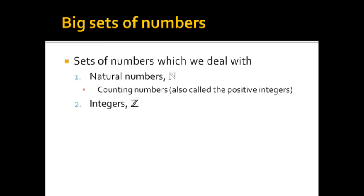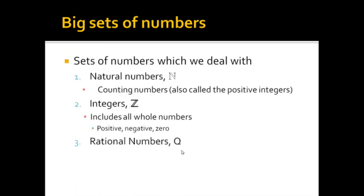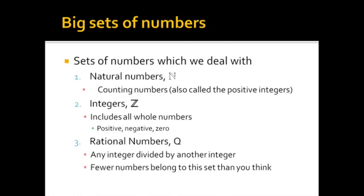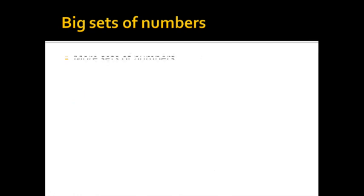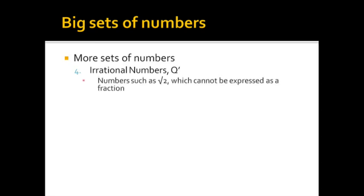The set of integers is basically all whole numbers, meaning the positive, negative, and zero numbers. Rational numbers, I'm just using the letter Q for this, and a rational number consists of any integer divided by another integer. Fewer numbers belong to this set than you think, actually. The rest are actually called irrational numbers, and I'm giving that the symbol Q' or Q with a tick after it.